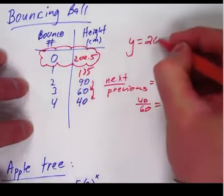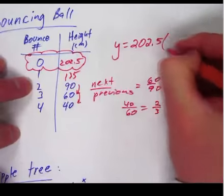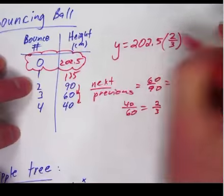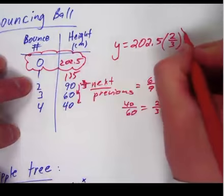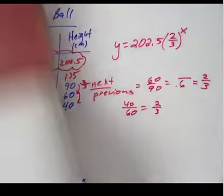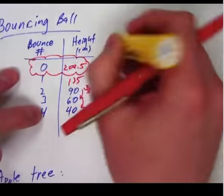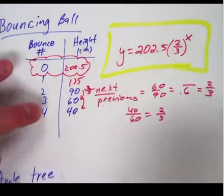So my equation would be what it starts at, 202.5, times the multiplier of 2 thirds, because that's what I'm multiplying every time, taking these times 2 thirds over and over, to the x power, because it's repeated multiplication. So my final equation would be represented by this exponential function.